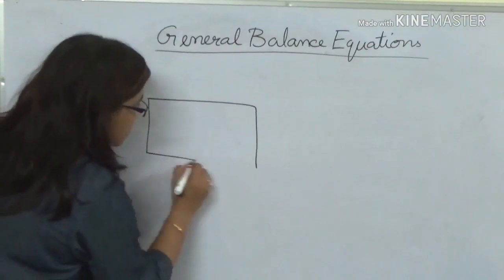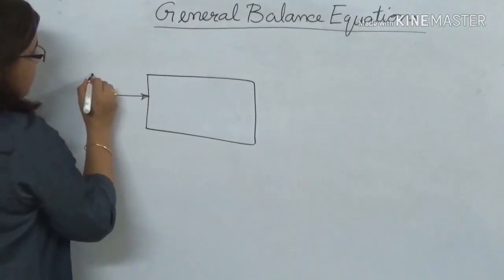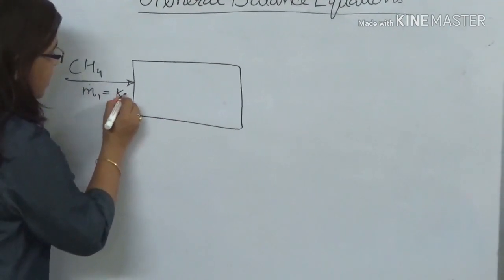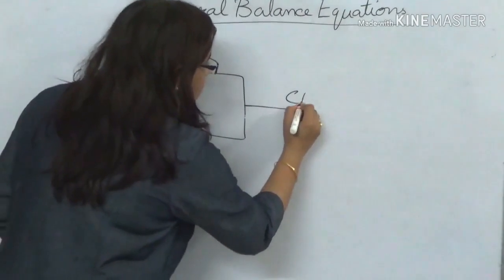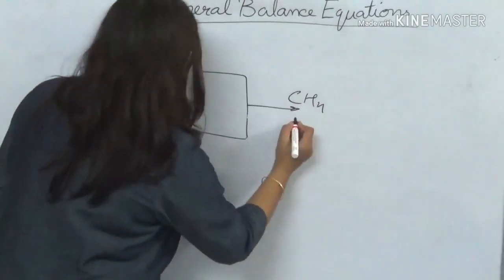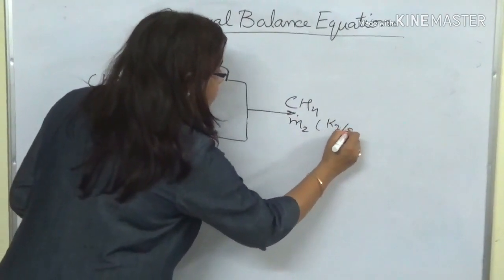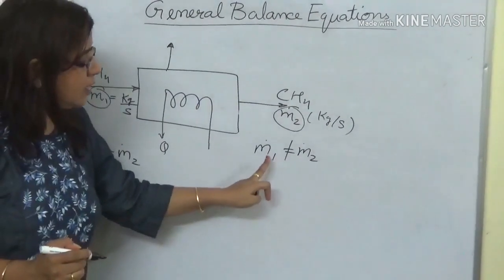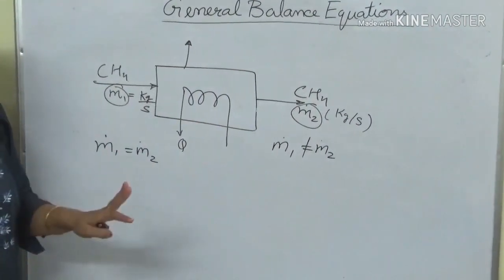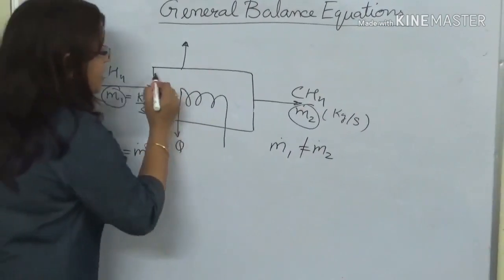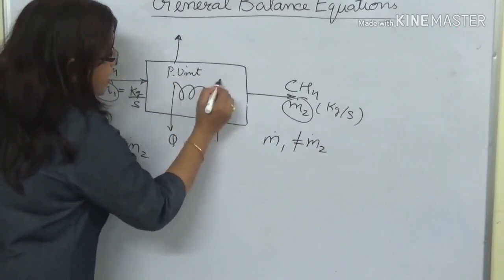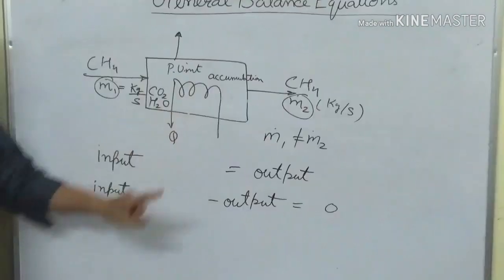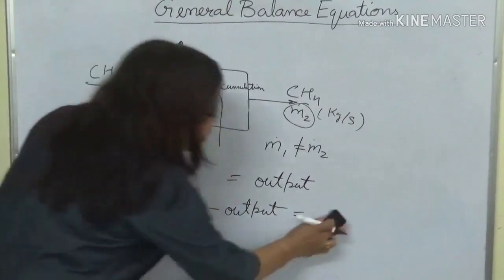Consider an example: a process unit with a stream of methane going in at rate Ṁ₁ (kg/s) and methane coming out at rate Ṁ₂ (kg/s). The simplest balance equation would be Ṁ₁ = Ṁ₂. If we observe that Ṁ₁ ≠ Ṁ₂, it means that methane is accumulating within the process unit, or methane is undergoing certain reactions. If input is not equal to output, then input minus output equals accumulation.